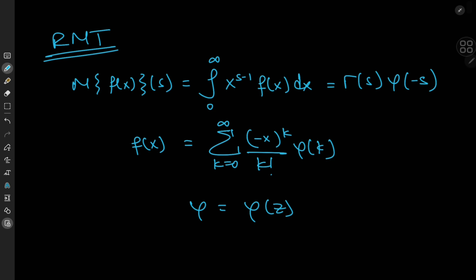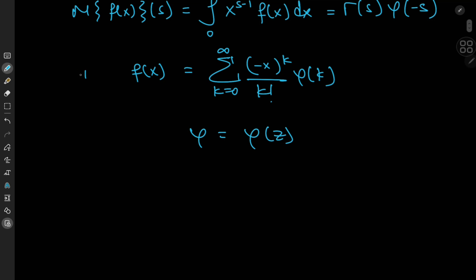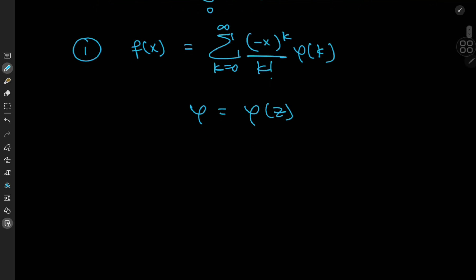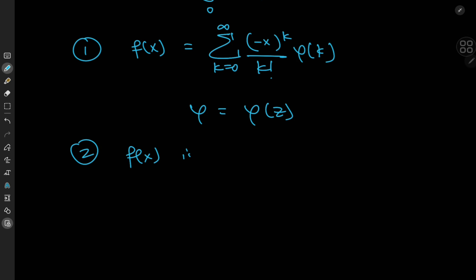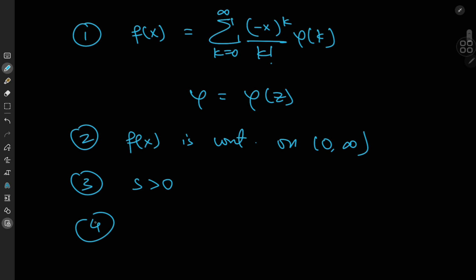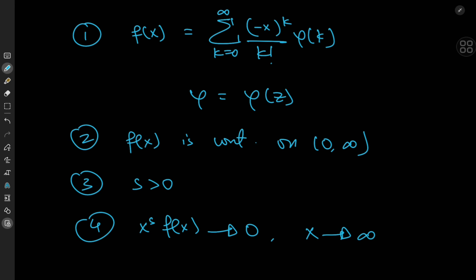The assumptions provided by Ramanujan for his proof are as follows: first, you need a function expandable in this form; second, f of x needs to be continuous on the right half of the real line; third, the parameter s must be positive; and finally, x to the s times f of x must approach 0 as x tends to infinity. These assumptions are not all that strong, and there's a much more rigorous proof provided by the legendary G.H. Hardy, which I'll present in a separate video. For now, we'll focus on Ramanujan's approach because it is pretty interesting in itself.